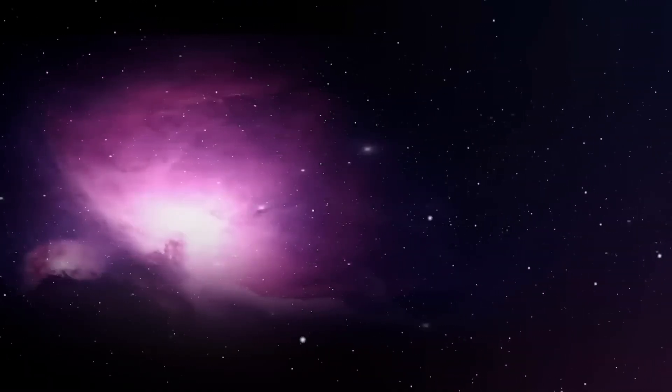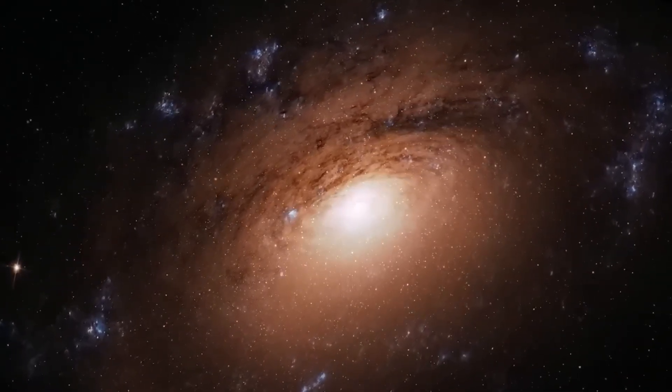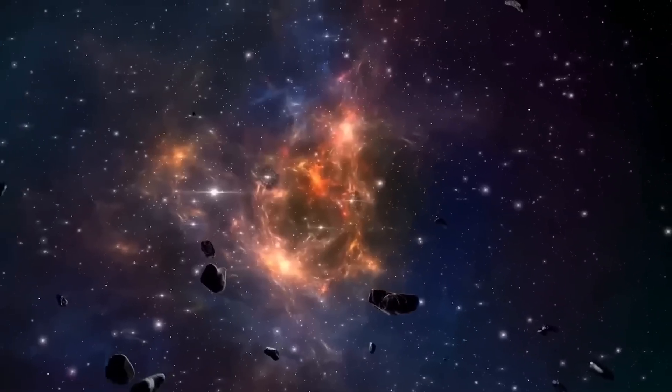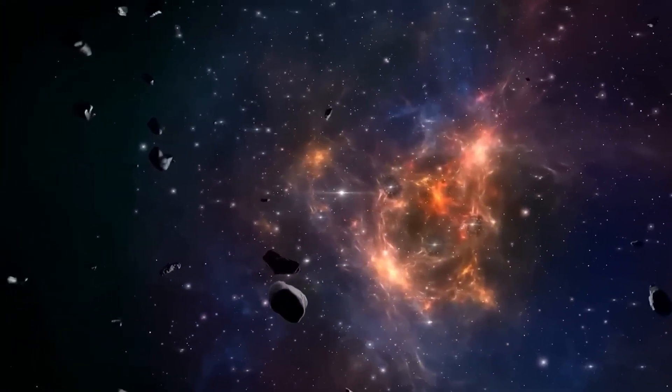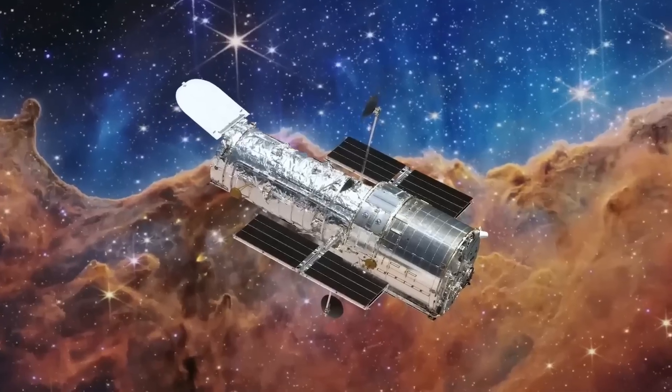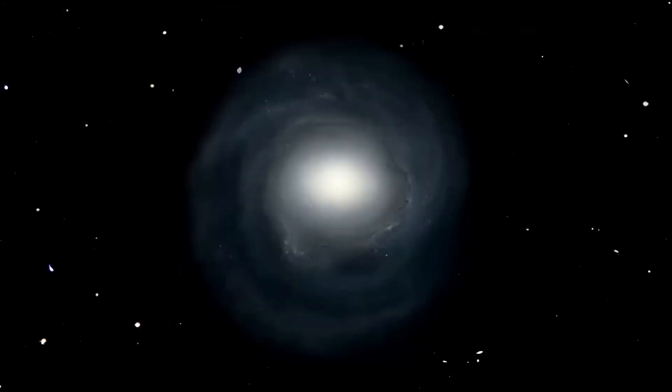To visualize this, imagine if our solar system were reduced to the size of a coin placed on a map of the United States. The entire Milky Way would then span the size of the actual continent. In that vast region, there would be around 300 billion star systems, and we are just one of them, adrift in a sea of unimaginable scale.